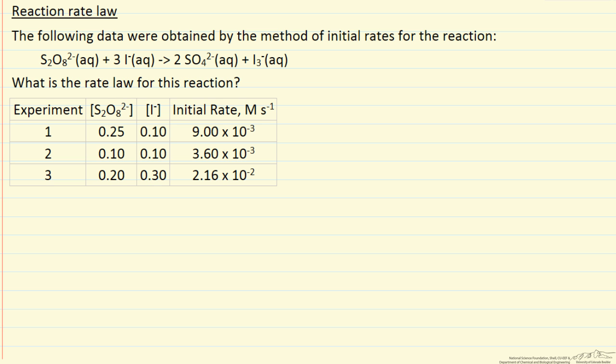In this problem, initial rates of reaction were measured for the reaction indicated. These were measured for different concentrations of the two reactants, and the question is what is the rate law for this? Essentially what it's asking us is we have the rate is some rate constant, and the concentration of this ion raised to some power m, concentration of the iodine ion raised to some power n. We're asking what's the value of m and what's the value of n, and what we want to do is use these initial rate measurements.